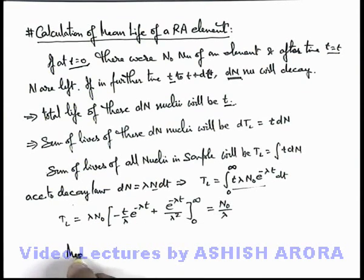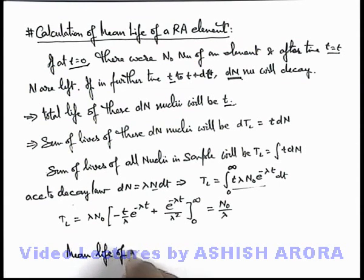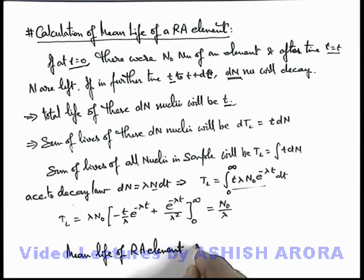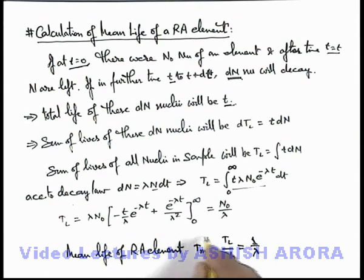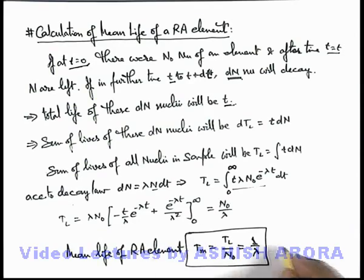So here we can directly write the mean life of the radioactive element. For this sample, T_m equals total life of all nuclei in the sample divided by N₀. Substituting the value, this will be 1 by lambda, which we have already studied directly in the previous section.